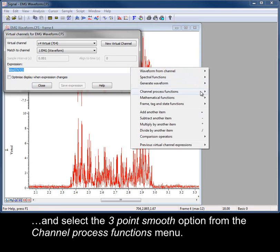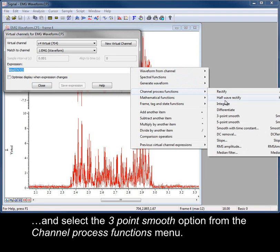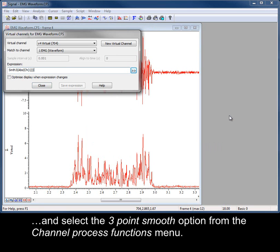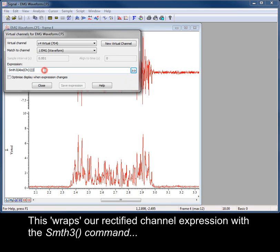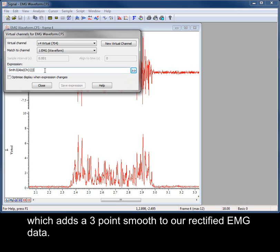And select the three-point smooth option from the channel process functions menu. This wraps our rectified channel expression with the smooth 3 command, which adds a three-point smooth to our rectified EMG data.